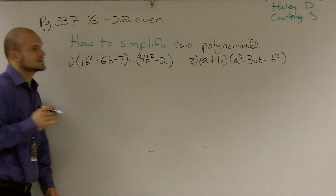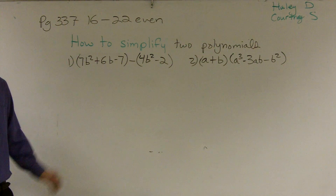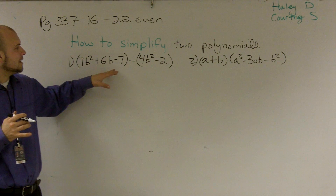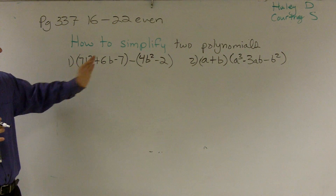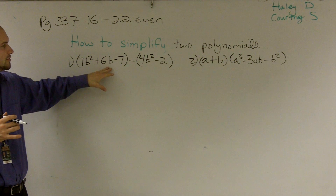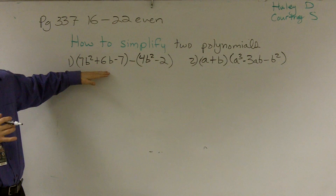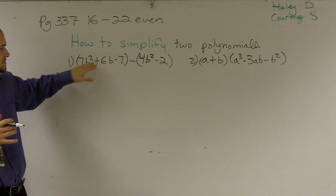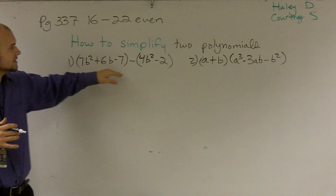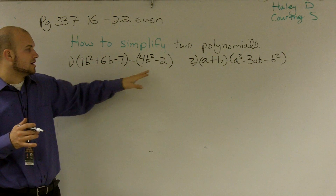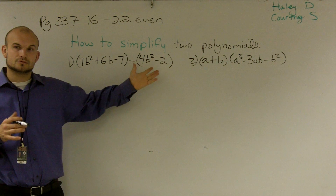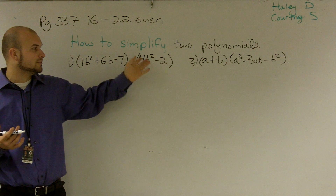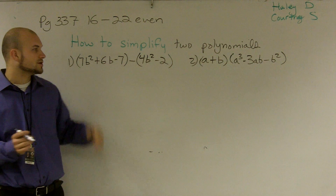What I'd like to do is show you how to simplify two polynomials. On the first problem, I have one polynomial which is actually a trinomial because it has three different terms, subtracted from another polynomial, which is what we call a binomial because it has two terms.